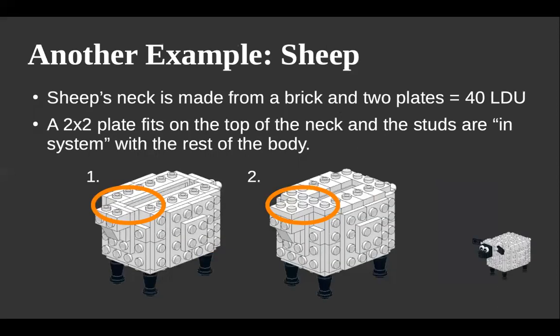Here's another example with my little sheep — this is not Shaun the Sheep, it's just a sheep. The circled studs on the left show that those bricks have studs facing outwards: the neck piece has studs facing forwards, and the side pieces have studs facing to the sides. Yet if you place a plate across them it fits, because the spacing between those studs is a multiple of 20 LDU, so the plates fit across them nicely, and the head attaches to the tops of those studs.